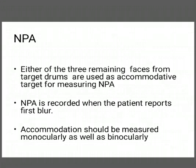Near Point of Accommodation: Near point of accommodation can be measured using the three remaining faces of the target drums as targets. It is recorded when the patient reports first blur as the target moves towards the patient's eye. Near point of accommodation should be measured monocularly as well as binocularly.